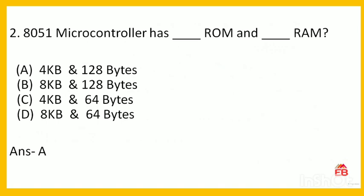Next: the 8051 microcontroller has how much ROM and RAM? The options are 4KB ROM and 128 bytes RAM, 8KB and 128 bytes, 4KB and 64 bytes, or 8KB and 64 bytes. The correct answer is 4KB of ROM and 128 bytes of RAM — option A is correct.